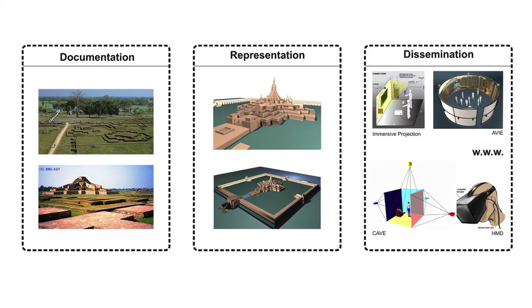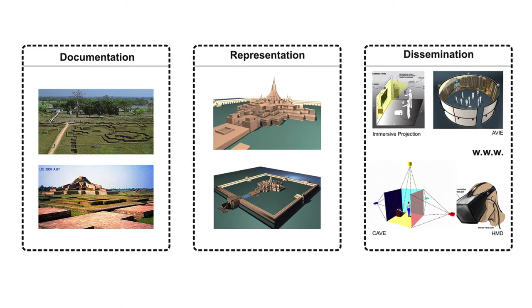The term virtual heritage has been around in one guise or another for many years now. Computers have often been used in the recording and dissemination of heritage sites, following the practice of architecture, albeit somewhat more slowly. Alonzo Addison, in his work 'Emerging Trends in Virtual Heritage', describes three primary remits of virtual heritage as: documentation, representation, and dissemination. Documentation can be briefly described as the accurate three-dimensional recording of heritage data such as site surveys, photogrammetry and 3D scanning.